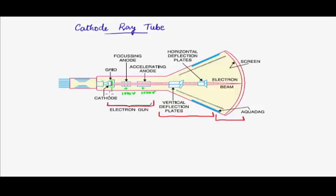There is also a grid, which is normally charged negative or at 0 volts — between 0 to minus 20 volts. The grid's first purpose is to push away stray electrons; only electrons going through the central region can pass, which helps in focusing. Second, by controlling the grid voltage, we can allow more electrons to pass at 0 volts or fewer at minus 20 volts, thereby regulating how many electrons actually flow through. This changes the number of electrons reaching the screen.